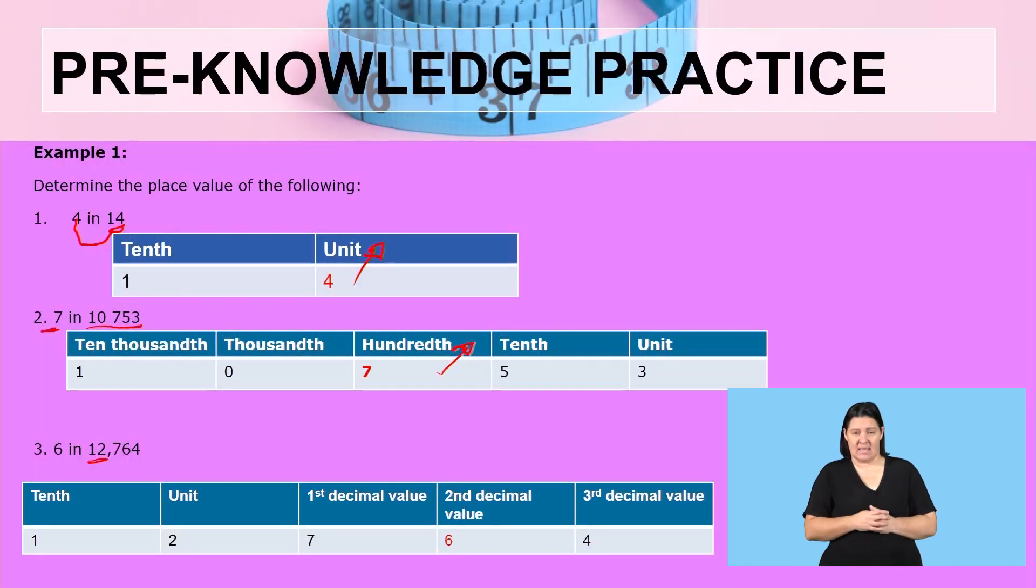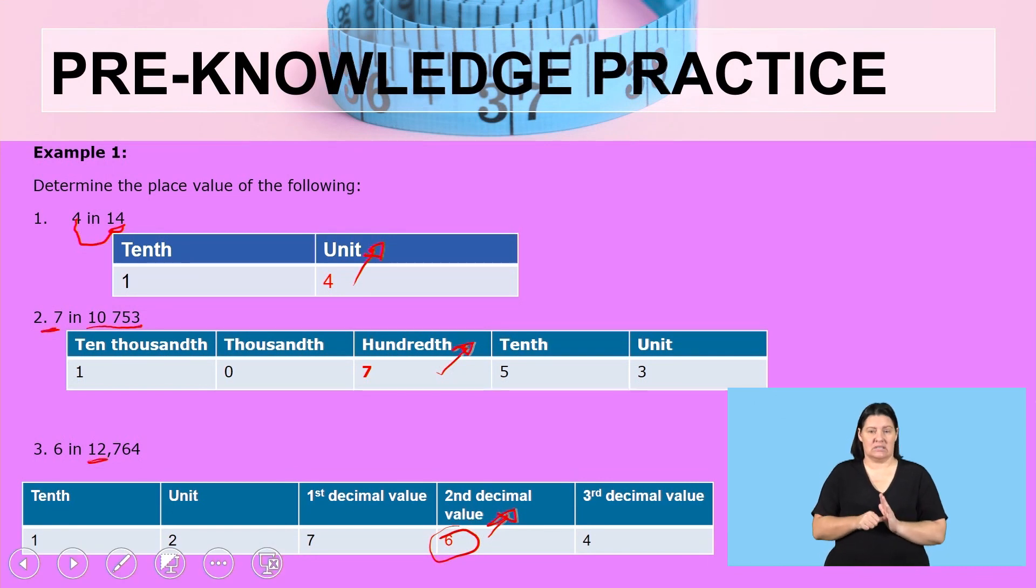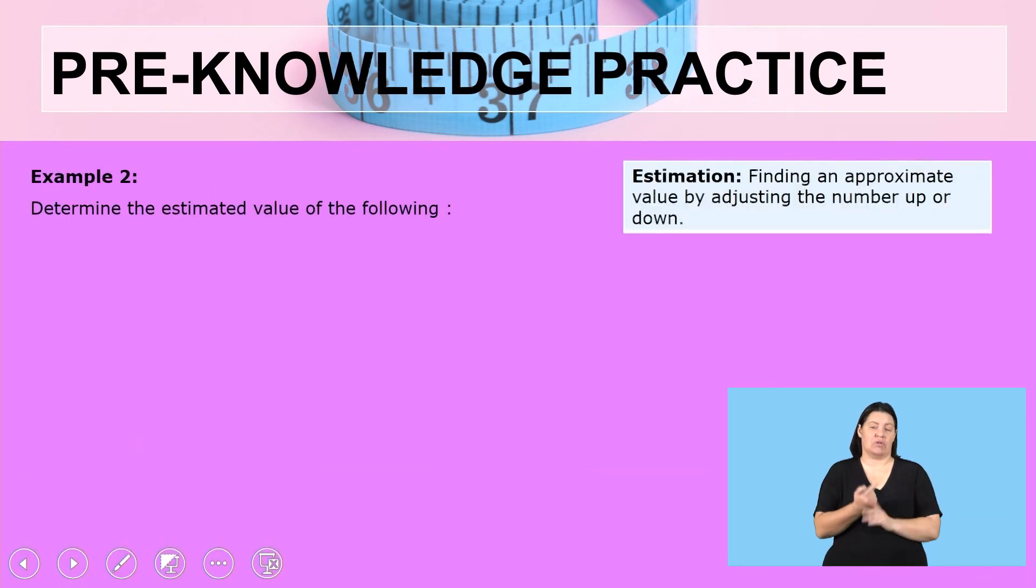The decimal values we are having are 7, 6, and 4. The first value after a comma, 7, is the first decimal value. The second value, 6, is the second decimal value. And the third value, 4, is the third decimal value. The question was to determine the place value for 6 in 12,764, so 6 is occupying the second decimal value. This is key when we do rounding later on.